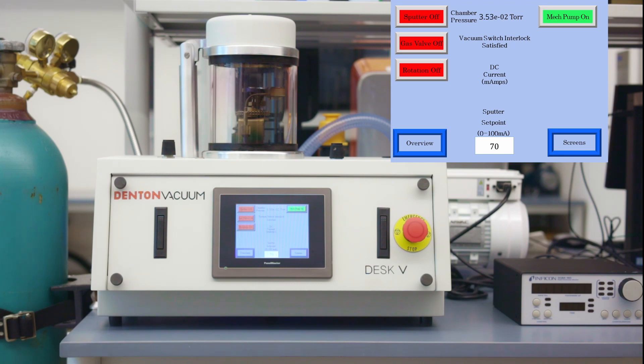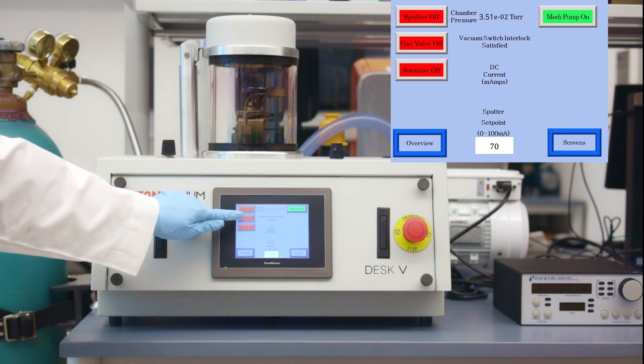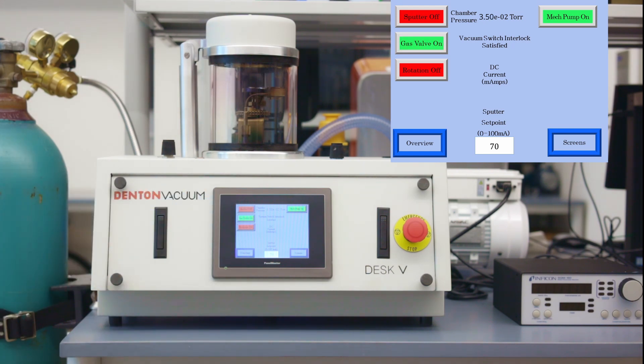Once the pressure drops to 0.03 torr or 3 times 10 to the power negative 2 torr, tap on gas valve. Wait until the pressure drops to 0.03 torr.